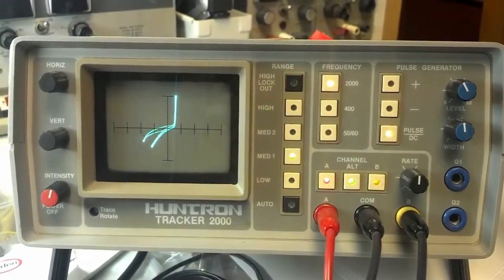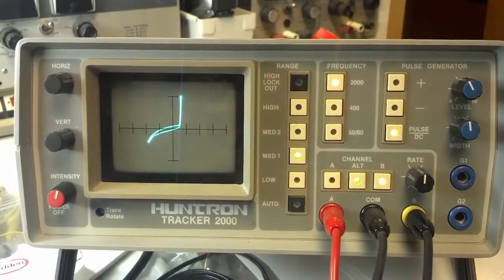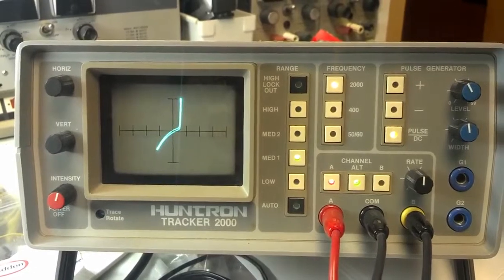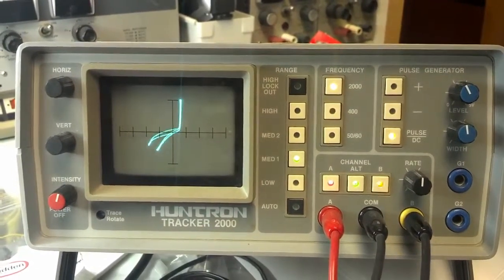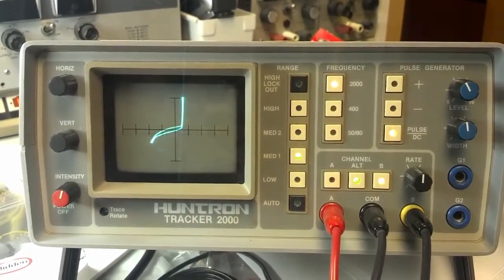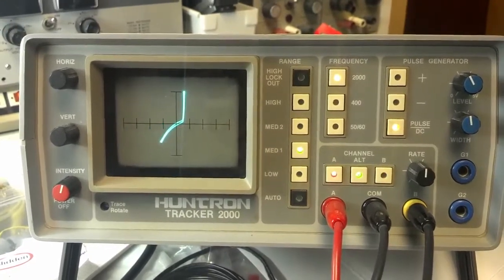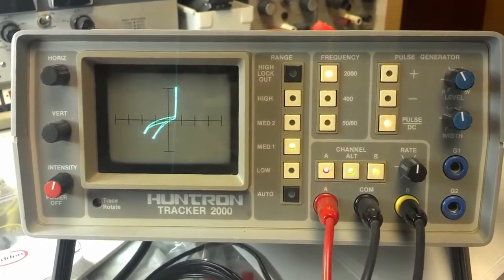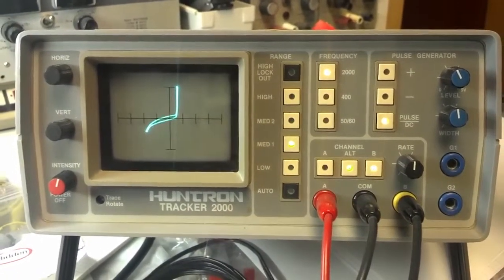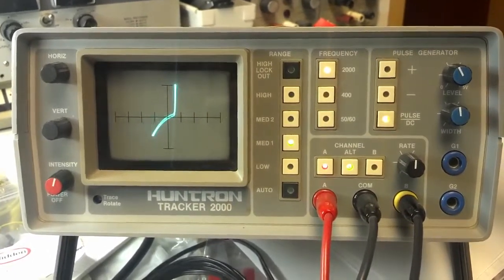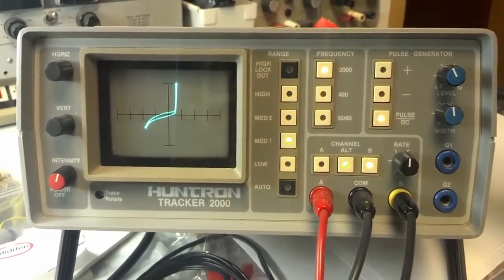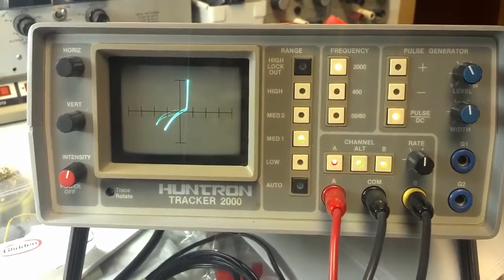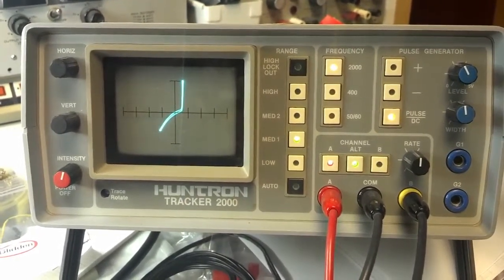We're using a Huntron tracker, which is a comparator. It does a Lissajous pattern of the different components, and it works when you have equal, when the two sides of the circuit are the same. In this case, the forward and reverse are the same circuits. So I'm on the cathode pattern of D4 and D5, and they look different.